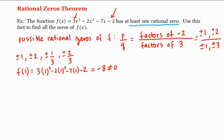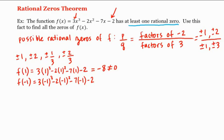What about negative one? Let's plug negative one in and see what we get. We have three times negative one cubed, minus two times negative one squared, minus seven times negative one, minus two. That gives us negative three, minus two is negative five, plus seven is positive two, minus two is zero. So yes, negative one is a zero of f.